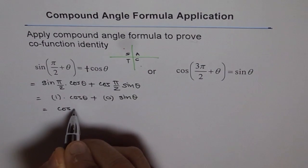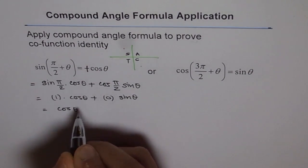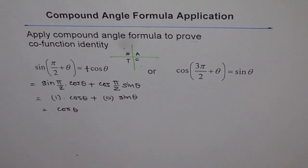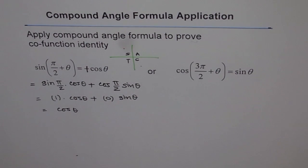So we are left with cos θ. You see it is plus cos θ. That is how the identities can be related — from the compound angle formula to the co-function identity.